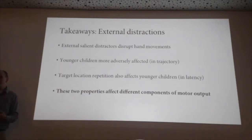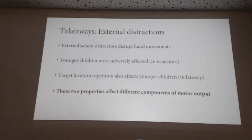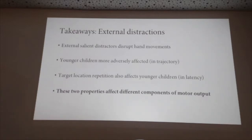I wish I could say something profound about what it means that these two properties affect different parts of movement. I'm tempted to say the salient distractor affects a later stage of processing, but planning of those movement paths occurs much earlier. Chris has done work with cognitive control where he also finds different aspects of cognitive control and different kinds of intertrial contingencies affecting different parts of movement. I'm still very much working on this and would be curious to hear people's thoughts.